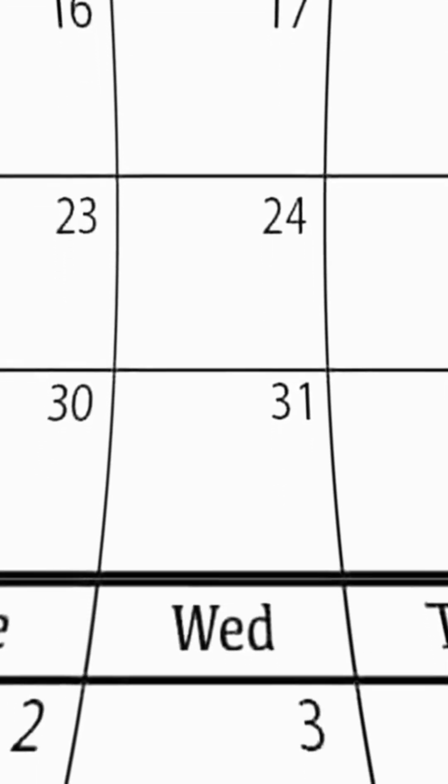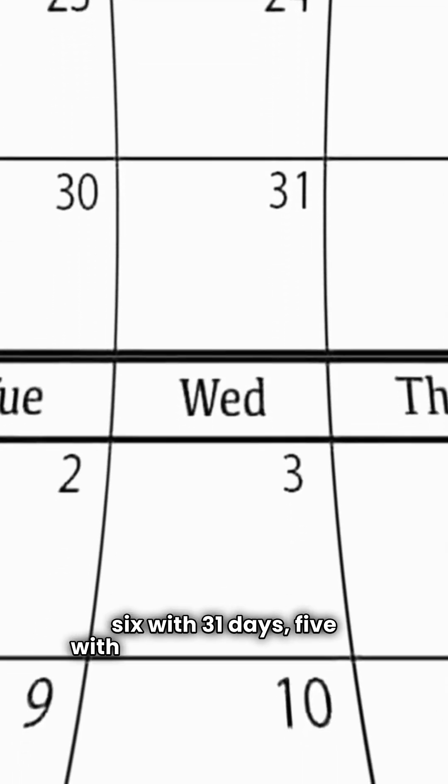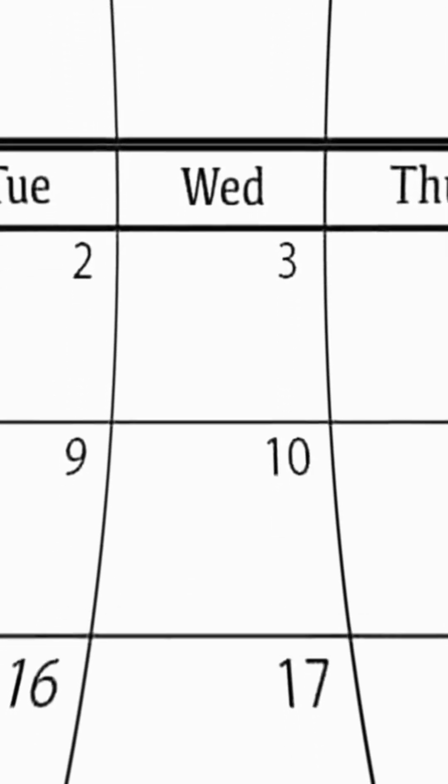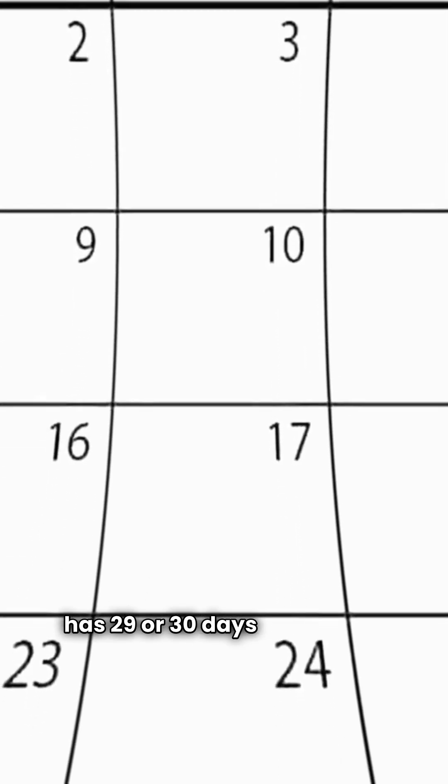The year has 12 months, 6 with 31 days, 5 with 30, and the last month has 29 or 30 days, depending on the leap year.